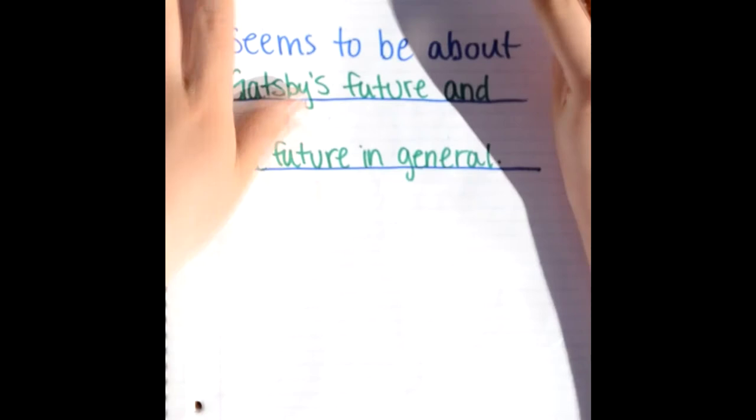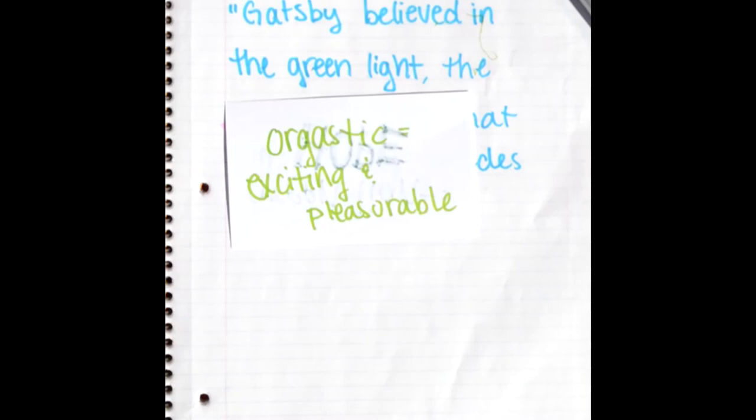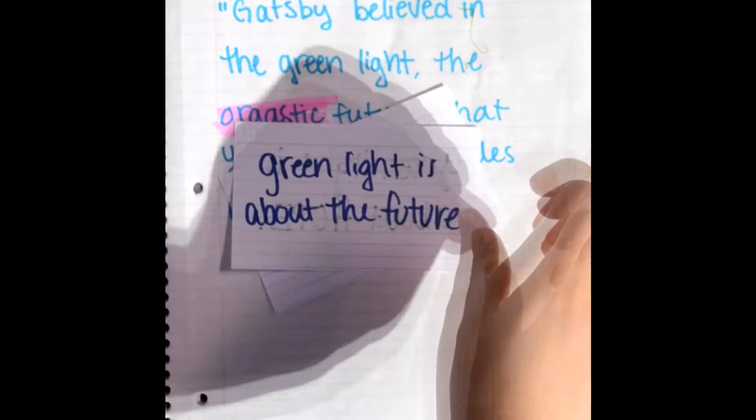Is that what the green light really represents, though? Let's go back to the passage and analyze it again. Taking into account the rest of the book, what else could the green light be a symbol of? Hope.